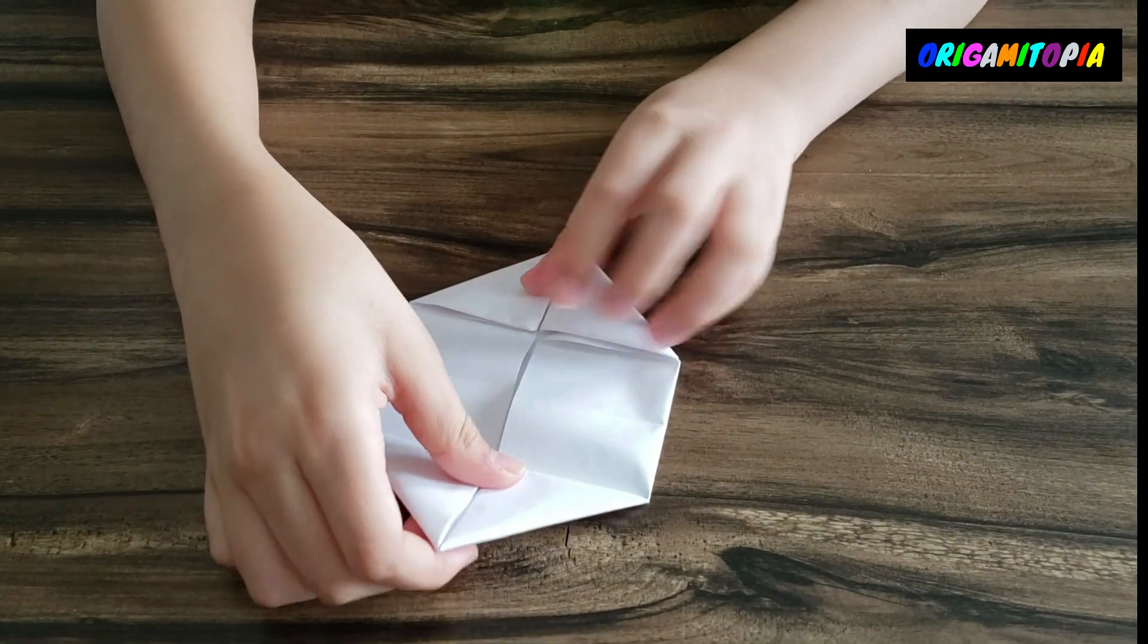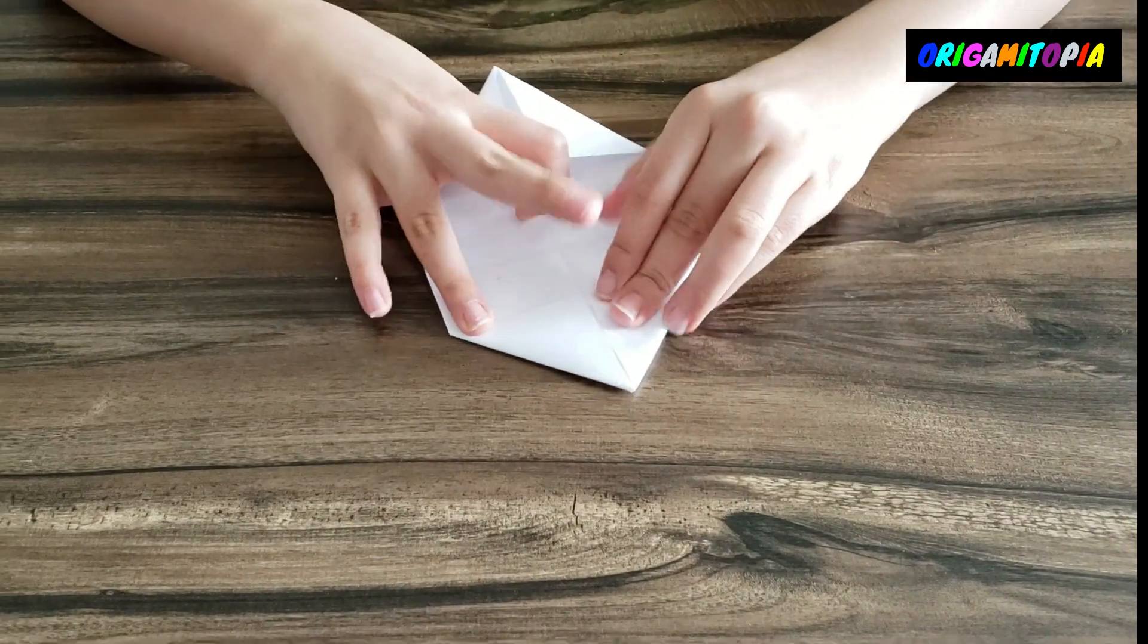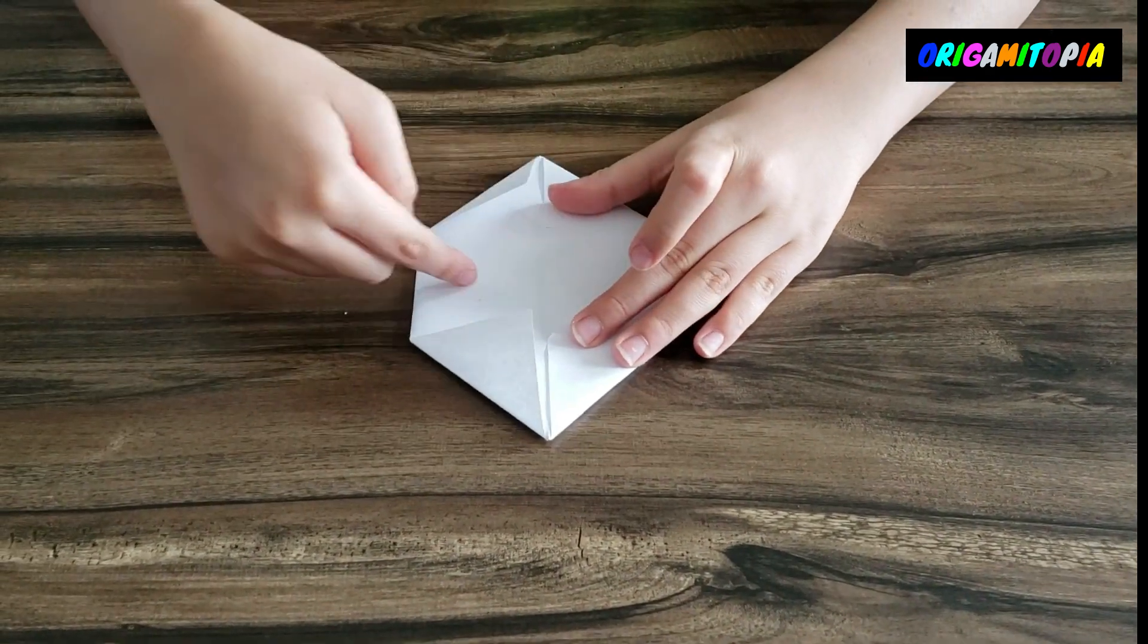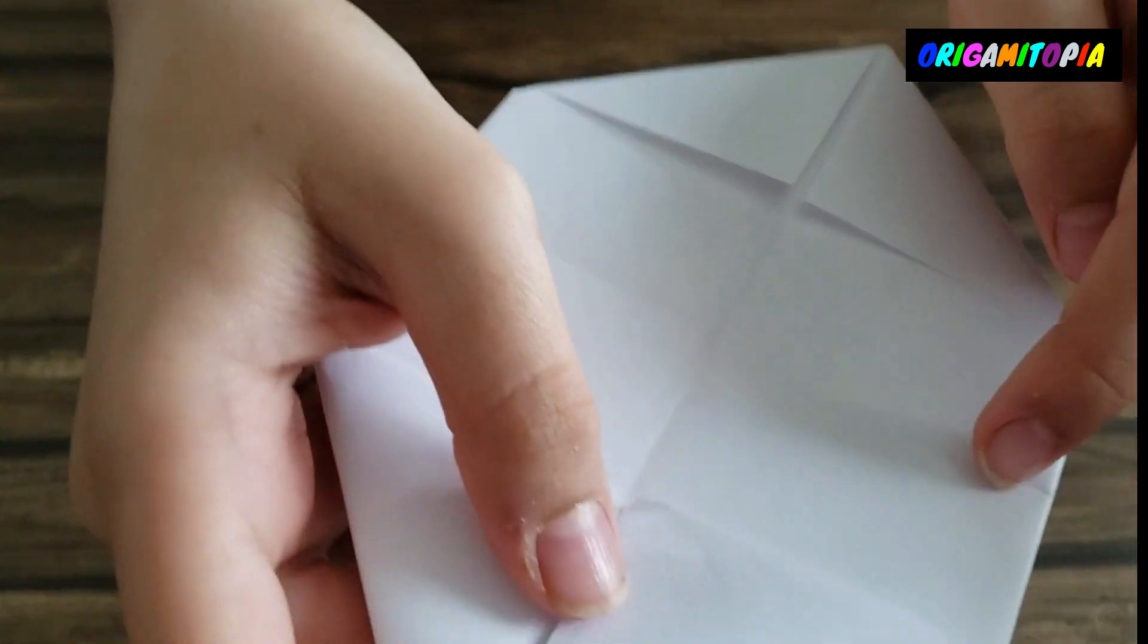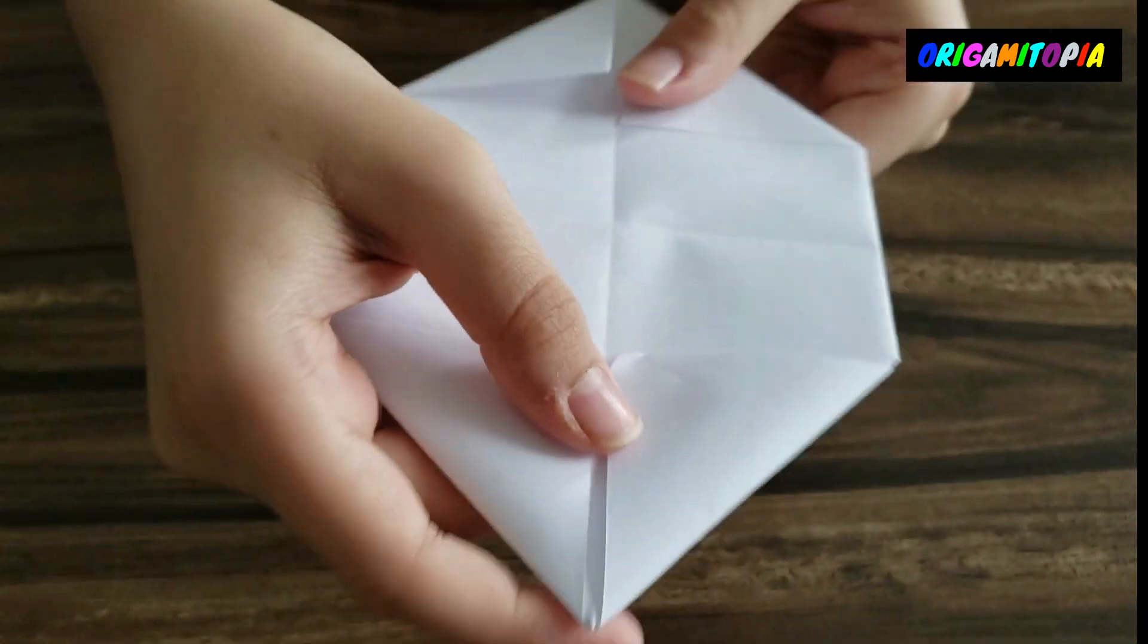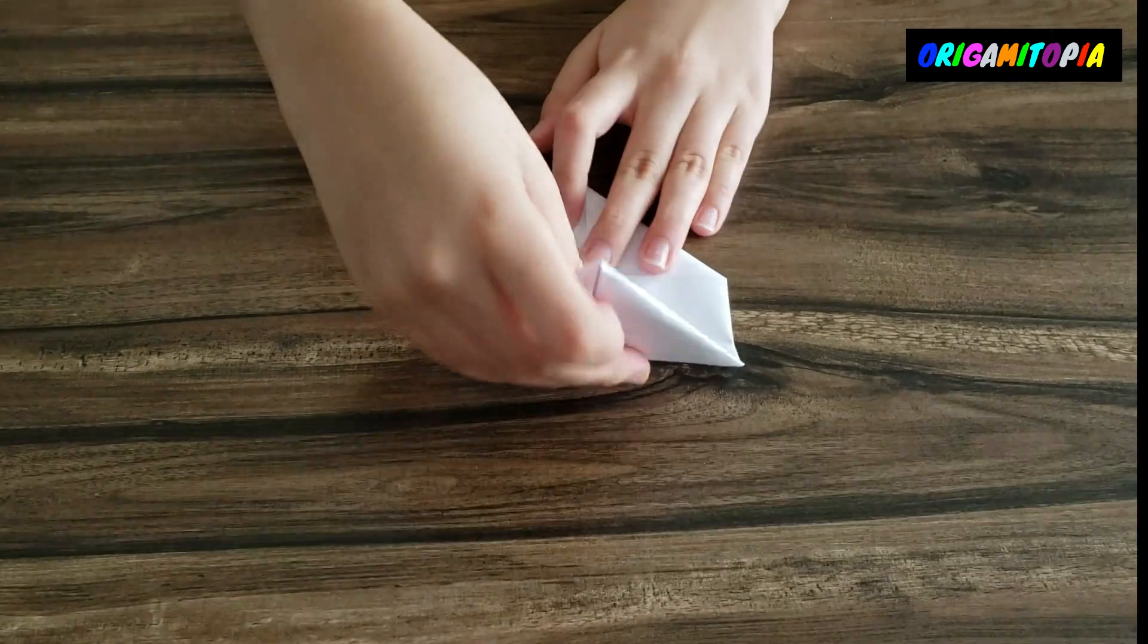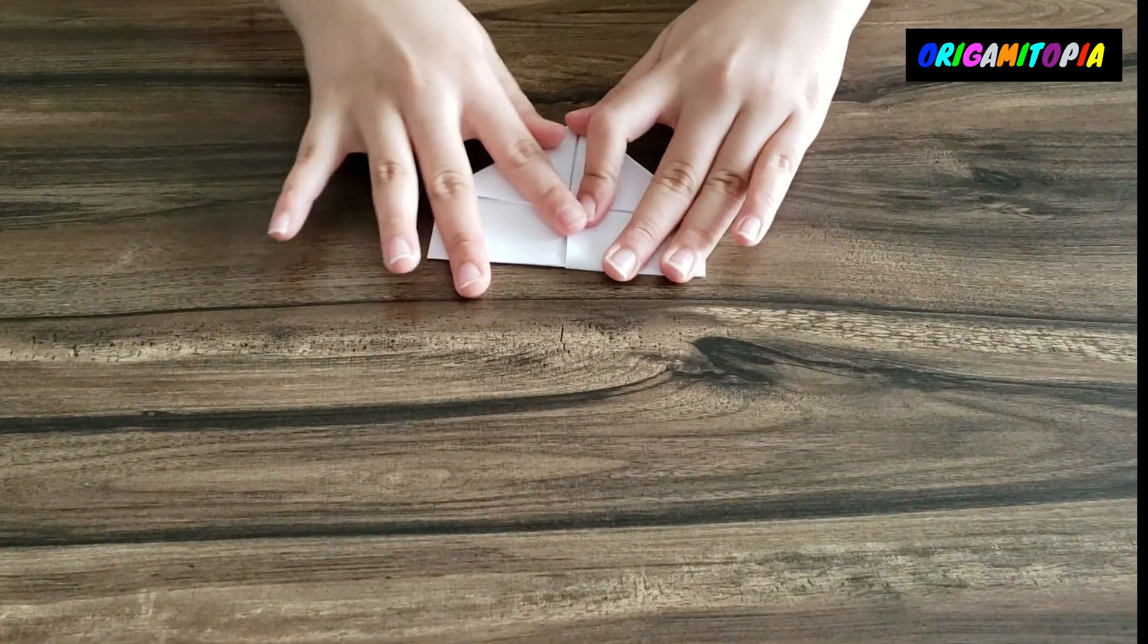And now the last step is turn it over and fold. You should notice, it's hard to see, you have this line right there. So now you just take it and fold it like that on that line.